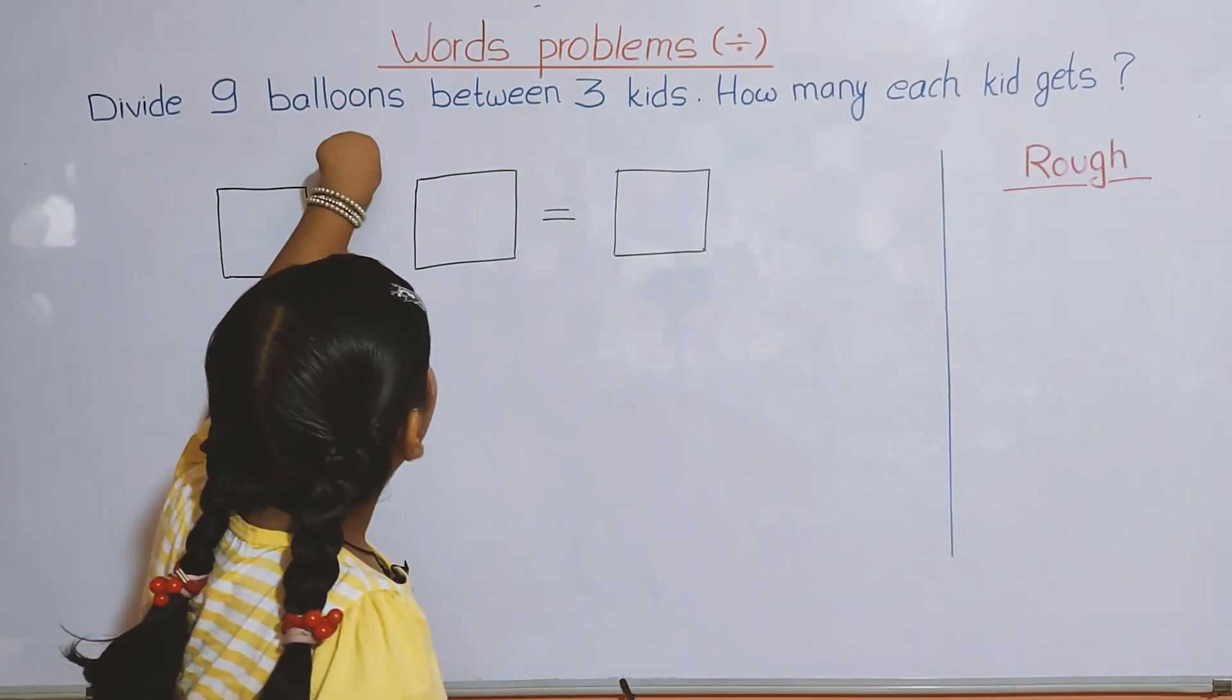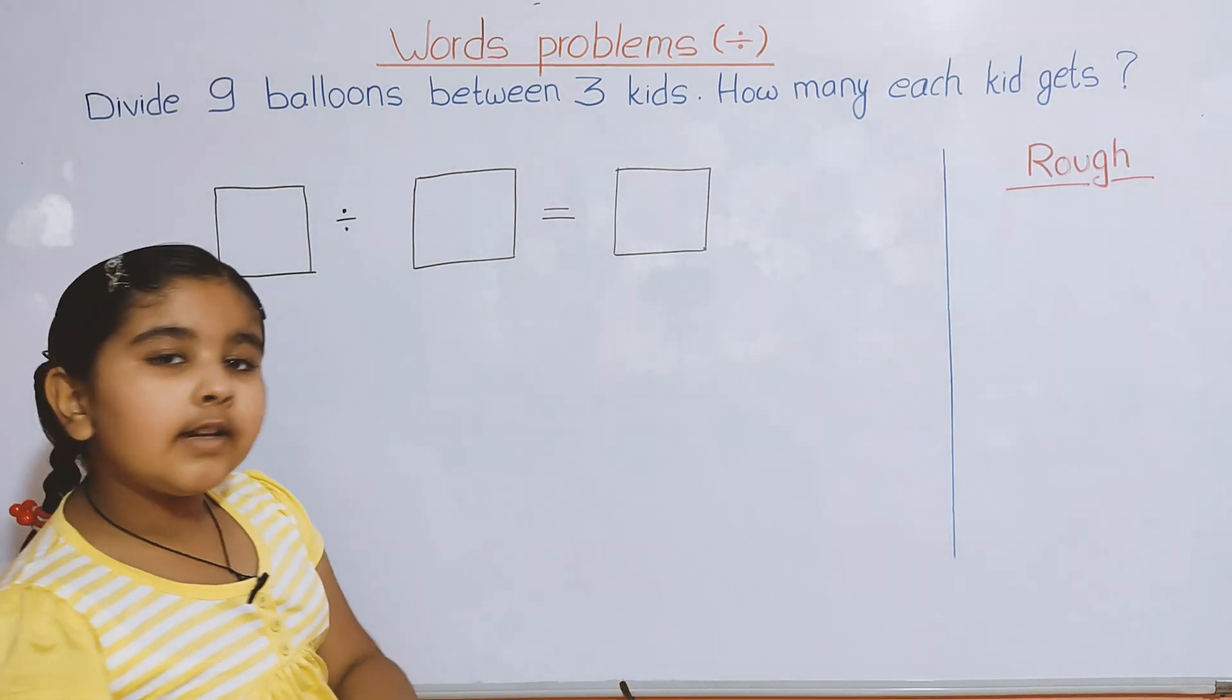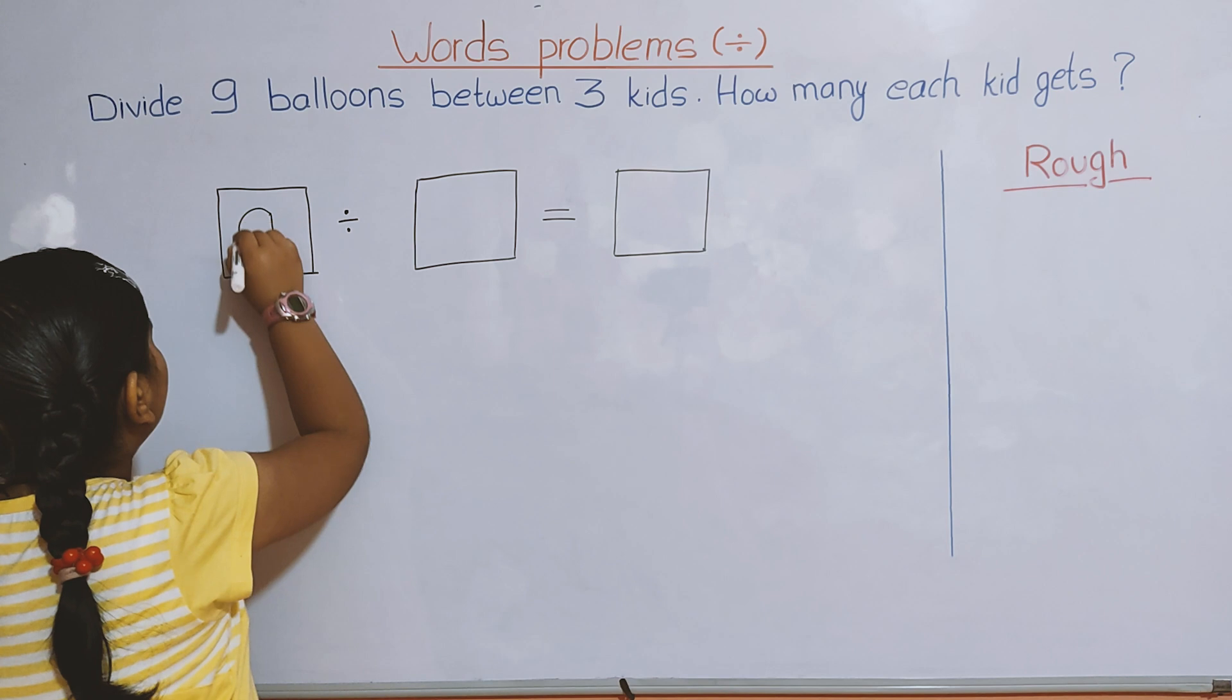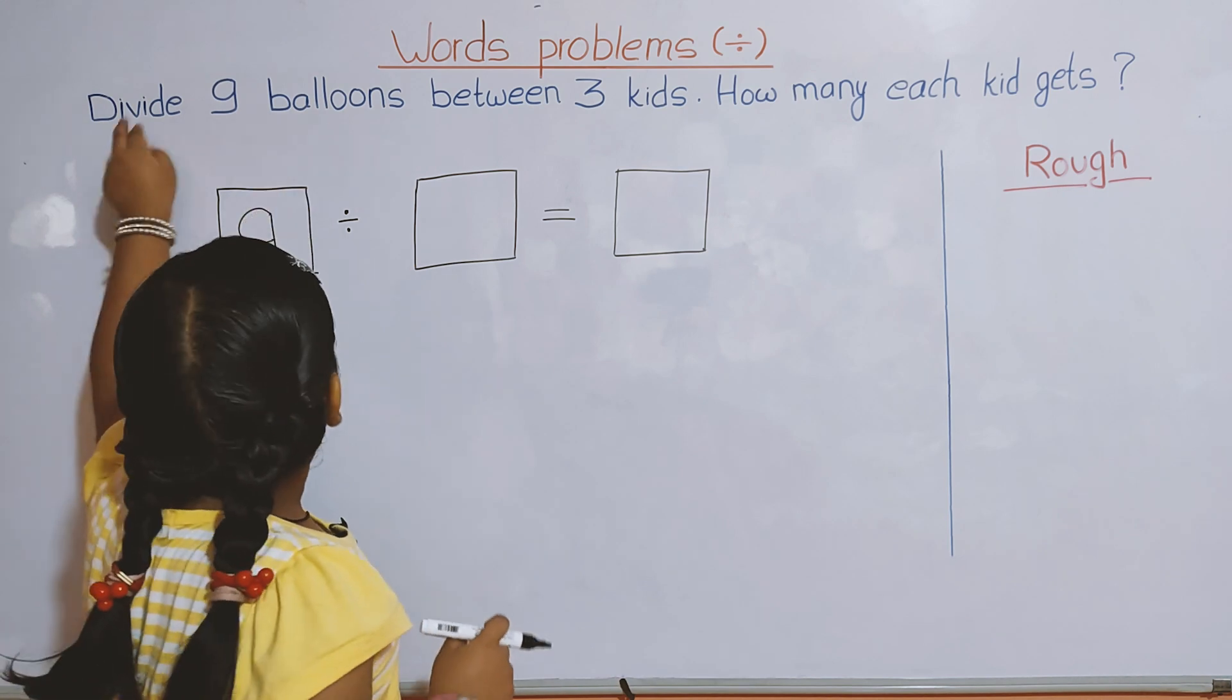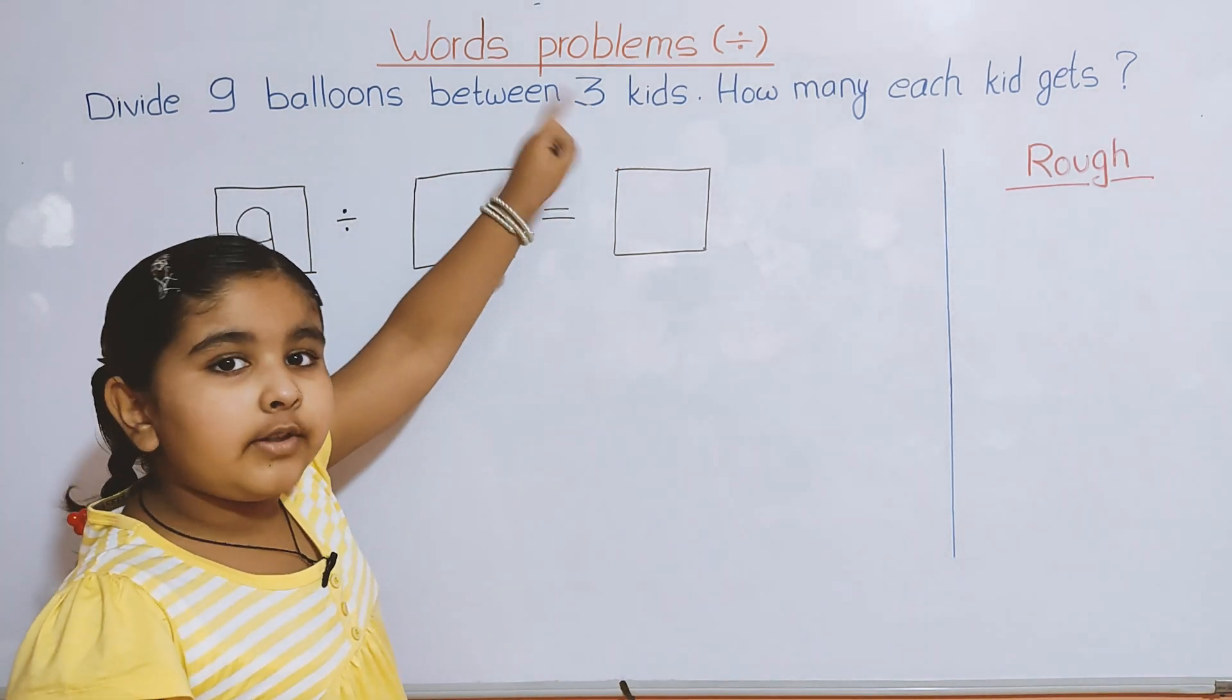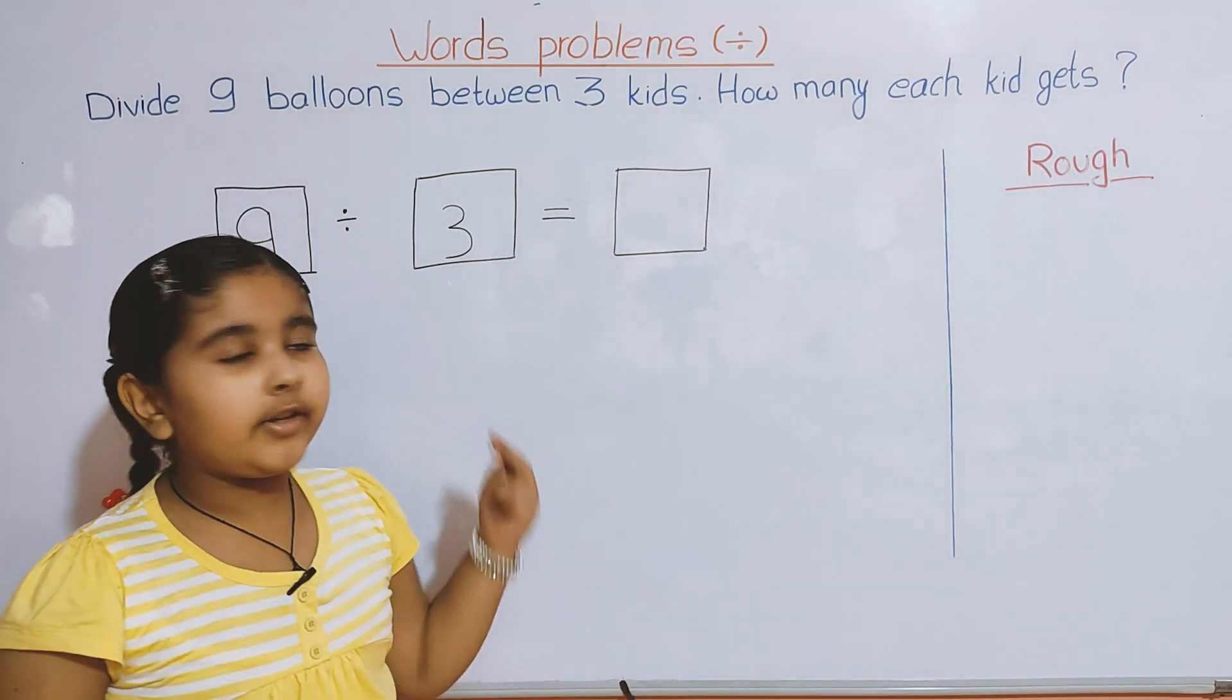First, there is divide 9. Nine is one number, so let's write 9 here. Next is divide 9 balloons between 3 kids. Three is also one number, so we write 3 here.